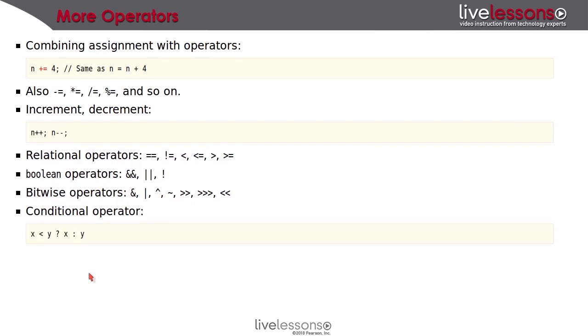There are other operators than just the mathematical operators in Java. First off, when you have any operator at all, you can combine it with an assignment. So here, look at n plus equals 4. That's the same thing as saying n equals n plus 4. In other words, compute n plus 4, and stuff it back into n. And that works with any operator at all. So you can use minus equal, asterisk equal, and so on.